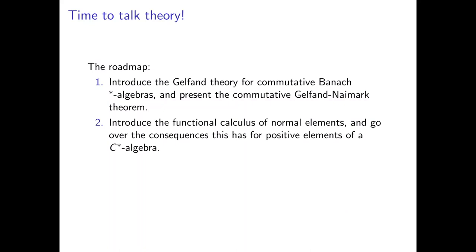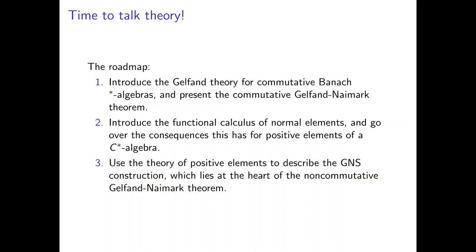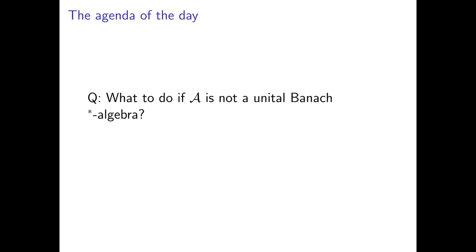Once we have this, we can introduce the functional calculus of normal elements and then go over the consequences this has for positive elements of a C-star algebra. Once we have positive elements established, we can use this theory to describe the GNS construction, which lies at the heart of the non-commutative Gelfand-Naimark theorem. The agenda of today is to answer: what do we do if A is not already a unital Banach-star algebra? The answer is: we unitize it.